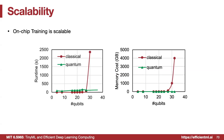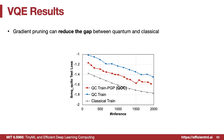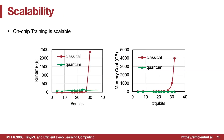Scalability justifies using real quantum devices for training: classical simulation requires storing a state vector of 2ⁿ complex numbers, making it infeasible beyond ~30 qubits (exponential runtime and memory). On a real quantum device, runtime and memory scale linearly with qubit count, making large-scale quantum ML only practical on actual quantum hardware.